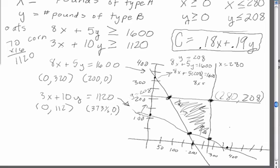And that's going to give you 8x equals 560, and you're going to divide both sides by 8. You get x equals 70. So that's going to give you this coordinate, this point here, which is 70 for x and 208 for y.